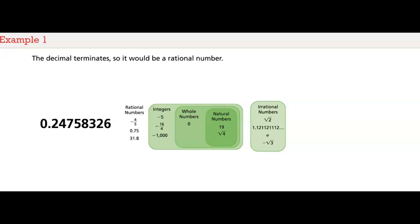It's 24,758,326 over 100,000,000. Now you know how the different types of numbers are related and how to classify them.